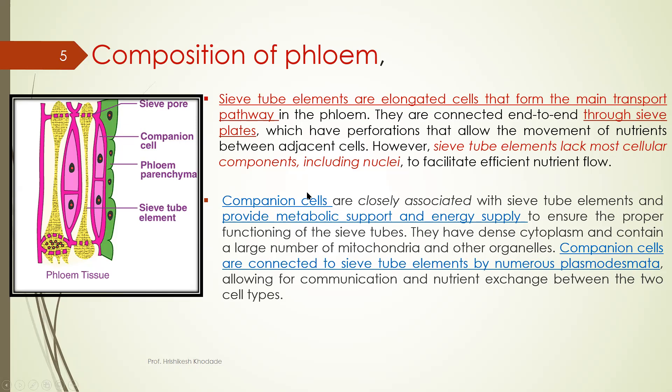The sieve tube element lacks most cellular components including nucleus. So you can notice the difference in these cells that phloem parenchyma cell have nucleus. These black dots are nucleus. Companion cell also has nucleus but sieve tube element do not have nucleus. You have to write this point in their answer.